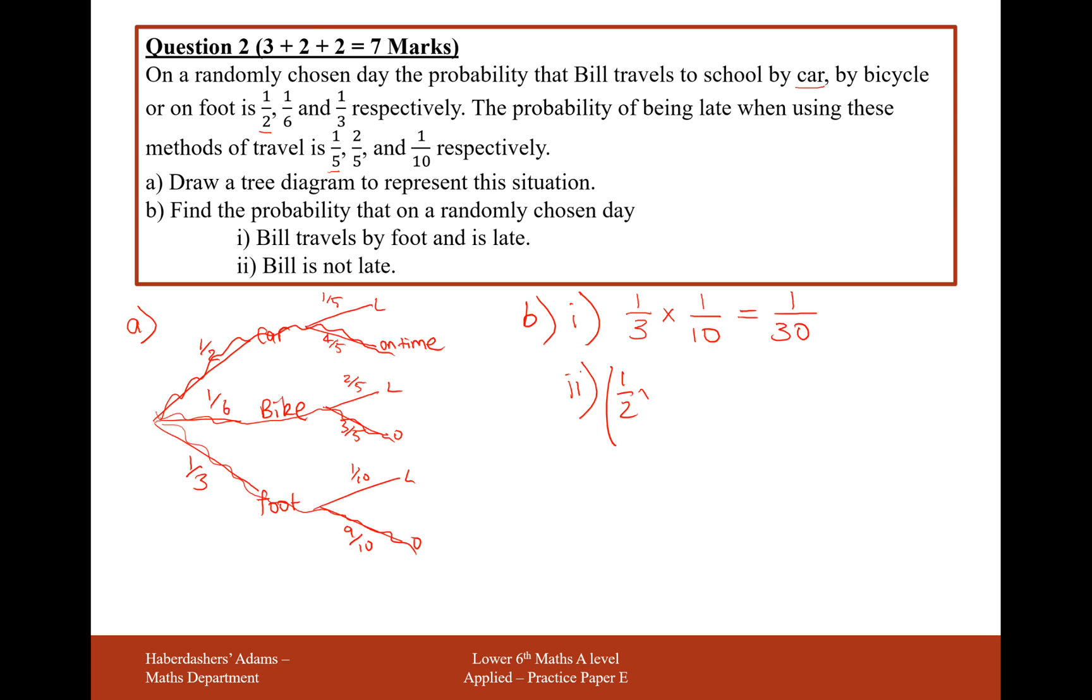So it's going to be a half times four fifths for the probability of being on time by car. The probability of being on time by bike is a sixth times three fifths. And the probability of being on time by foot is a third times nine over ten. So multiplying these together, we're going to get four tenths, add three thirtieths, add nine thirtieths.